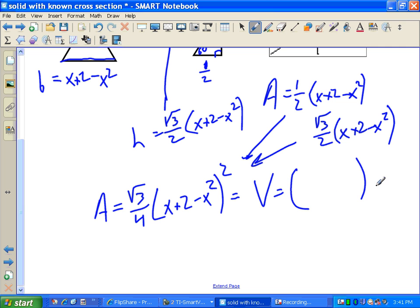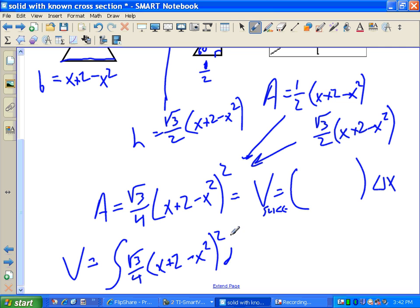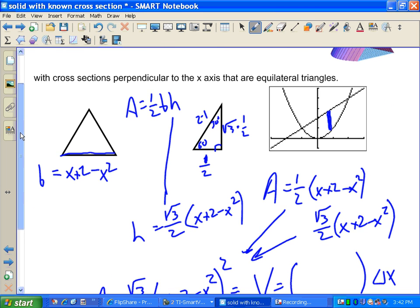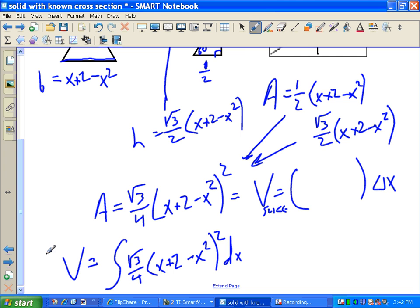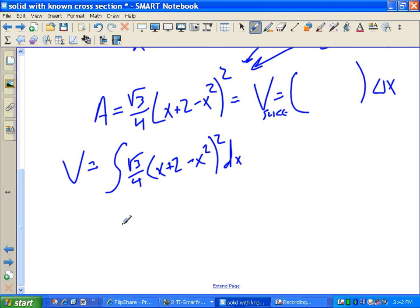If I want a volume, I take all that stuff and I multiply by delta x. If I want the total volume, this is the volume of a slice, total volume, I'm going to integrate. And I'm going to integrate this thing right here, root 3 over 4, x plus 2 minus x squared squared, dx. We're going to use the same upper and lower limit that we used before, which is negative 1 and positive 2. We're going to integrate from negative 1 to positive 2.